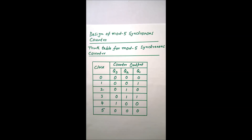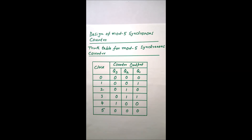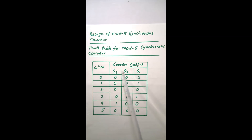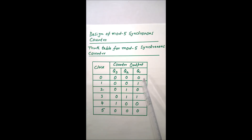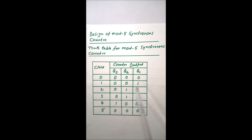Designing a mod-5 synchronous counter. This is the truth table: Q3, Q2, and Q1 are the outputs of three flip-flops. When there are no clock pulses, all outputs show zero. After the first clock pulse you can see 0-0-1, which is decimally equivalent to 1. After the second clock pulse it shows 0-1-0, indicating decimal 2.